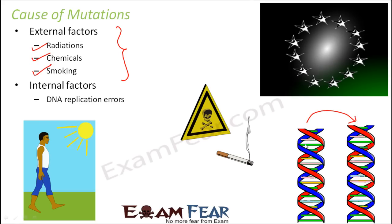As shown in the visual, when the DNA duplicates there are chances that some sequence gets altered. If you compare the sequences, you can see that in one portion the color changed — for example, from pink to blue. It might seem like just a small change in one particular sequence, but it can have an adverse effect on the trait because it affects protein synthesis.